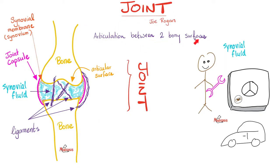The joint is an articulation between two bony surfaces. Each bone is covered with articular cartilage — hyaline cartilage — surrounded by a fibrous capsule with a lot of collagen. This fibrous capsule is lined on the inside by synovial membrane, which lines everything in the joint except the articular surfaces. If there is a disc or a meniscus in the middle, it will not be lined by synovial membrane. The synovial membrane's function is to secrete synovial fluid, whose function is lubrication, making movement much easier.